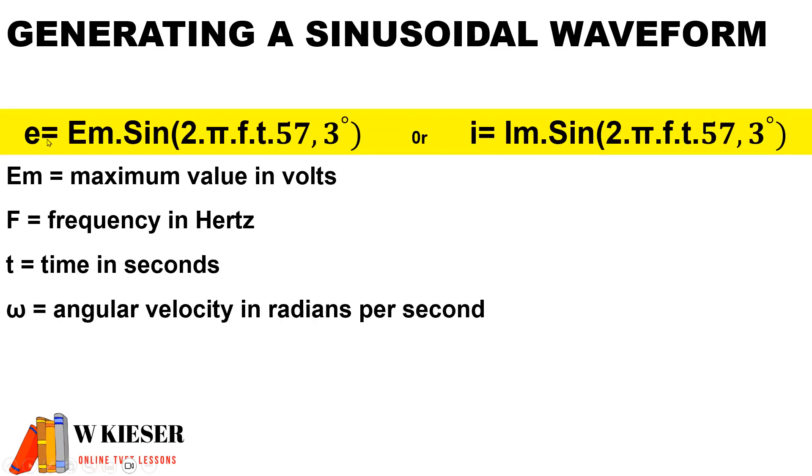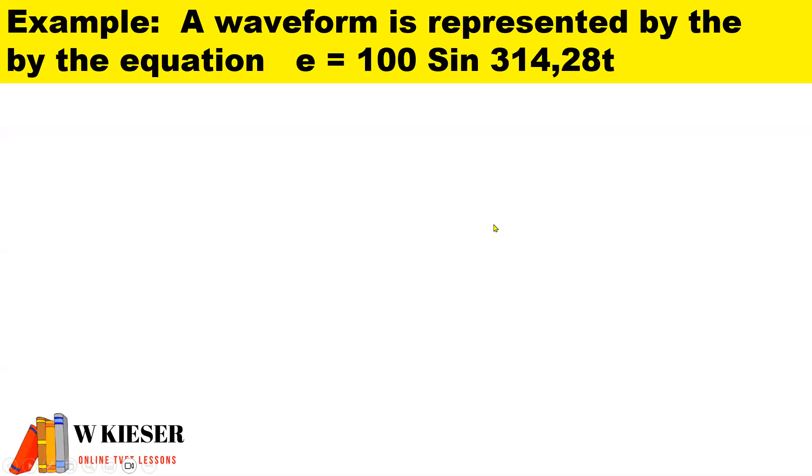For our equations, if we have the letter e it tells us we're dealing with voltage. If we have the letter i, it tells us we're dealing with current. So Em is the maximum value in volts, F is the frequency in hertz, t is time in seconds, and ω is the angular velocity in radians per second. We must remember to multiply by 57.3. In this example, a waveform is represented by the equation e = 100 sin(314.28t) for time in seconds.